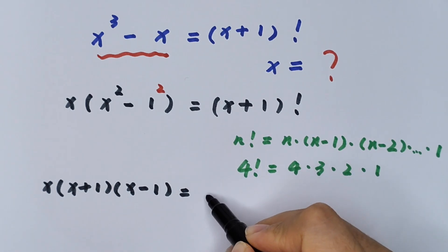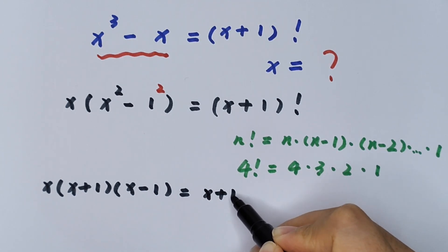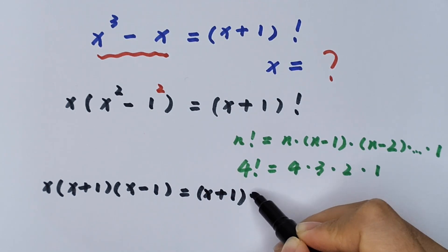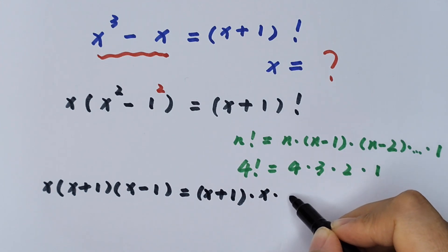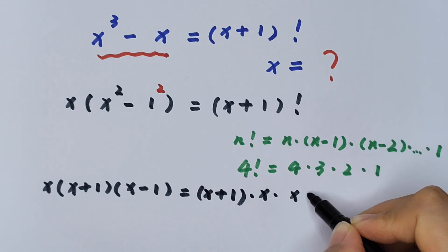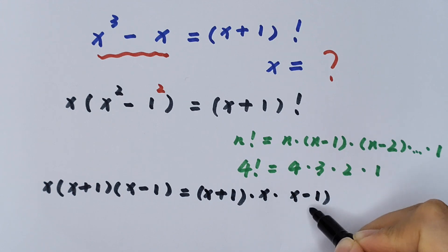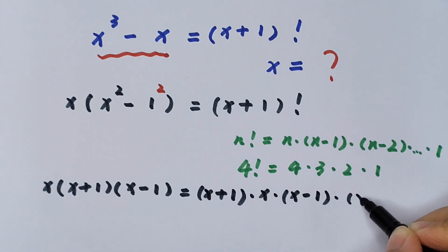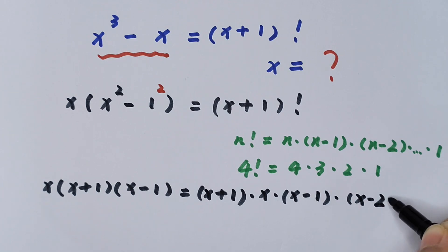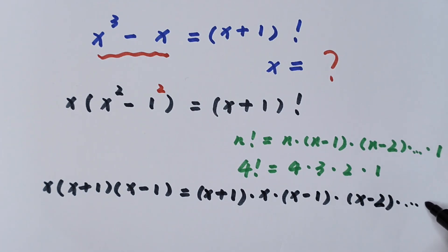The right side (x + 1)! can be written as (x + 1) × x × (x - 1) × (x - 2) × ... × 1. Now we simplify.